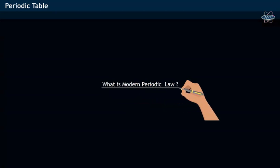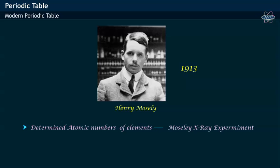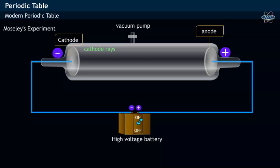What is Modern Periodic Law? Henry Moseley in the year 1913 determined the atomic numbers of elements by conducting an experiment in the apparatus shown.